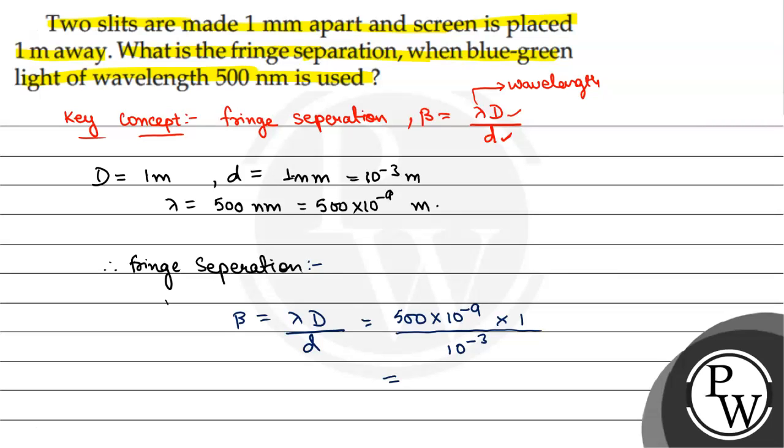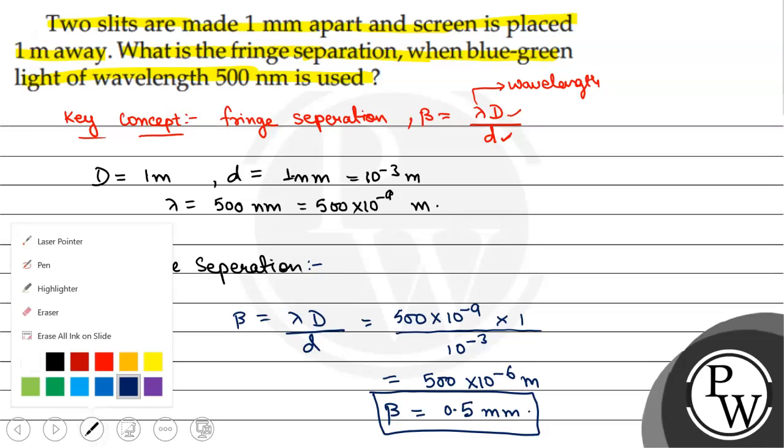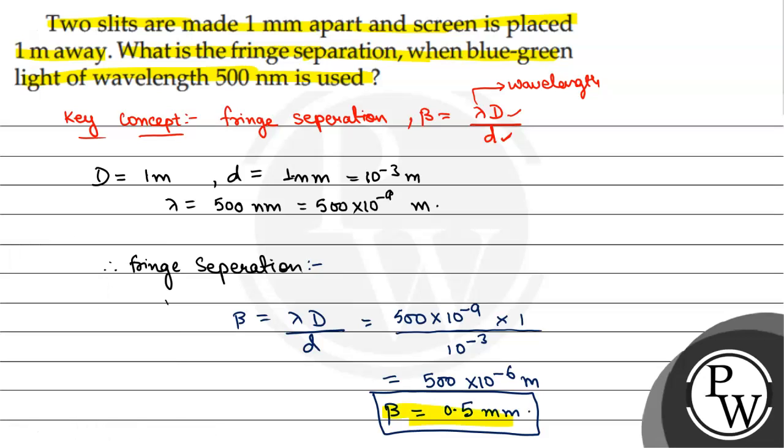This will come as 500 into 10 to the power minus 6 meters, which is 0.5 mm. So the fringe separation or fringe width will be 0.5 mm. The final answer is 0.5 mm. Hope you all understood it well.